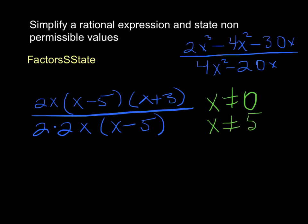Alright, so now we've stated our non-permissible values, we can actually do our reducing. So we can reduce this factor with this factor here. We can reduce this factor of x and this factor of x. And then we can reduce one of our 2's there.